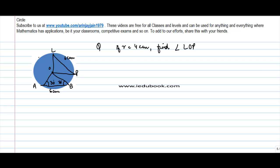Okay, so we are given a problem 1 on theorem 1. In this circle we are given that there is a triangle AOB and triangle LOP.